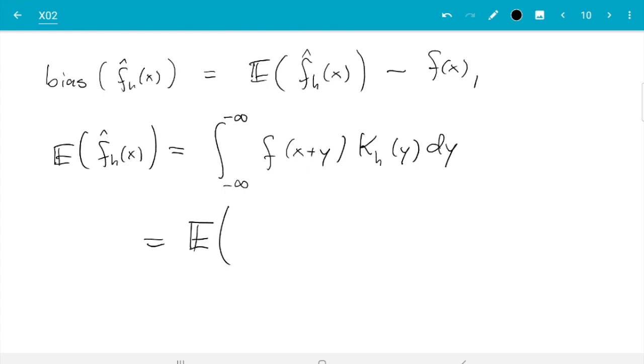So that's expectation. The function is f(x+y) but only y is the variable of integration, so it's x plus random variable capital Y where Y has density k_h. So that's the random variable we just introduced in the previous section.